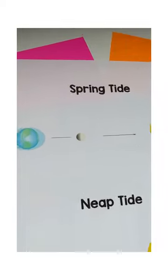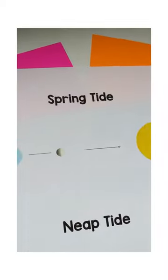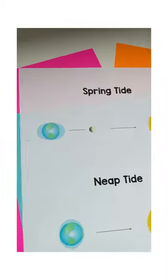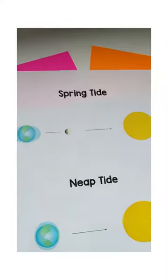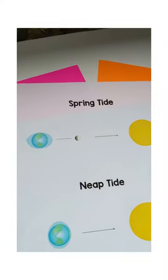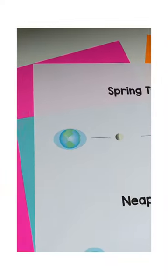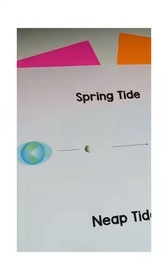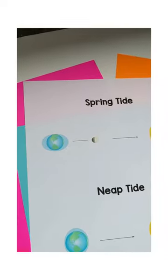To know the difference, just know that spring tide starts with an S, and that is when the earth, the moon, and the sun are straight and aligned in a straight row. They both start with S.